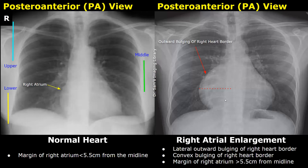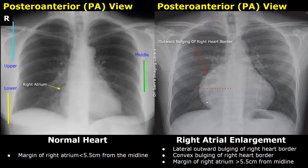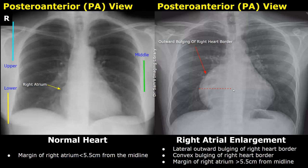Our first case is right atrial enlargement. The right atrium forms the right heart border in a posterior-anterior view. In normal cases, the margin of the right atrium should be less than 5.5 centimeters from the midline, but in cases of right atrial enlargement there is lateral outward bulging of the right heart border, which is convex in shape.